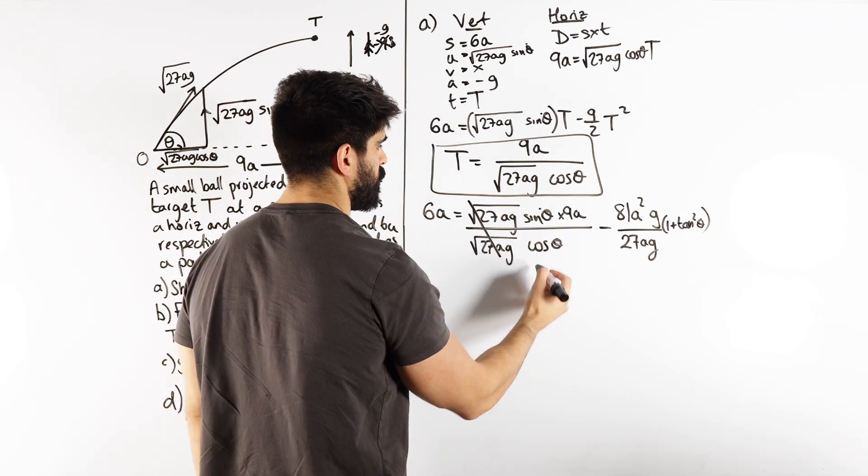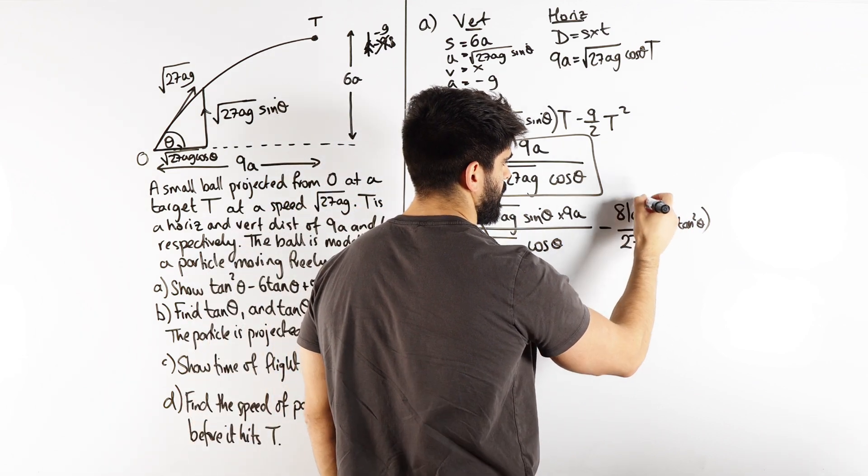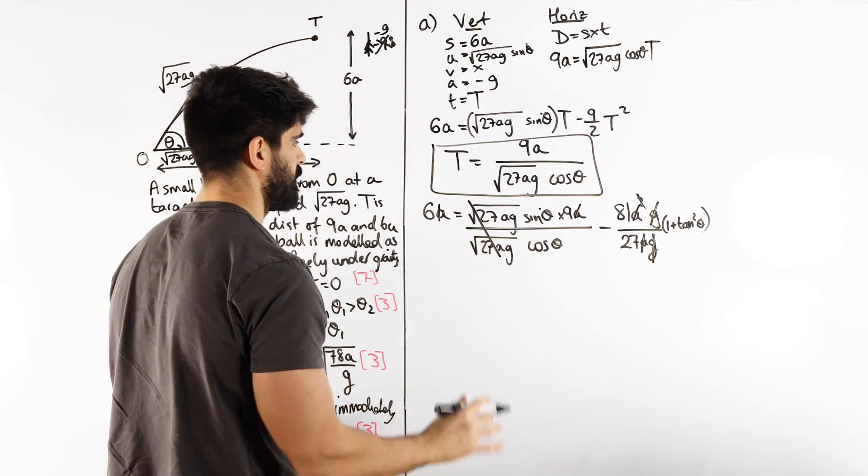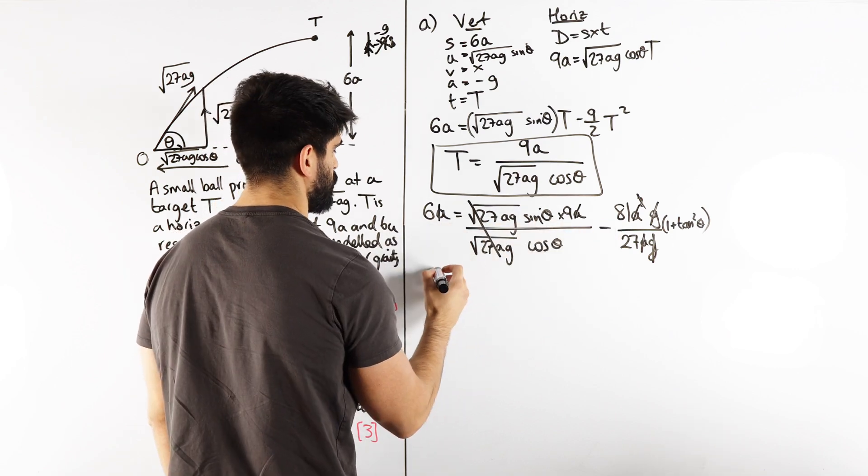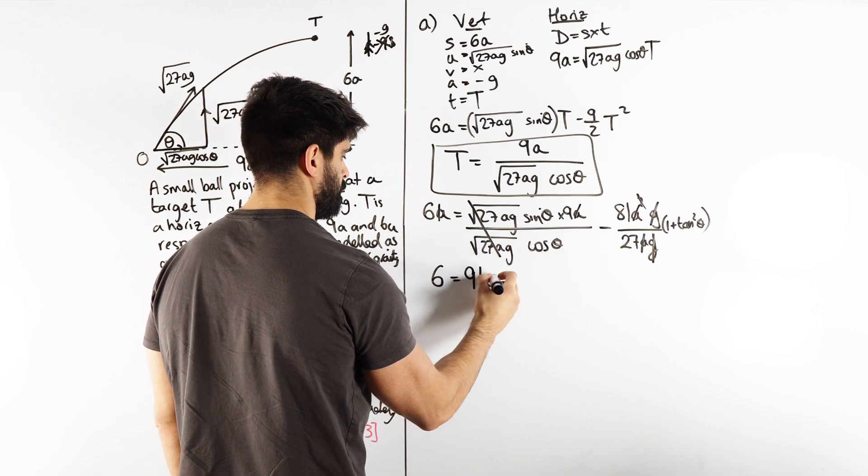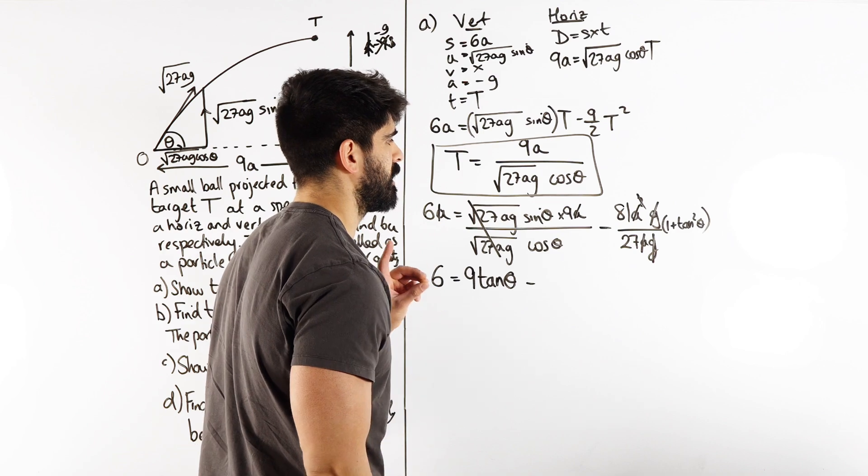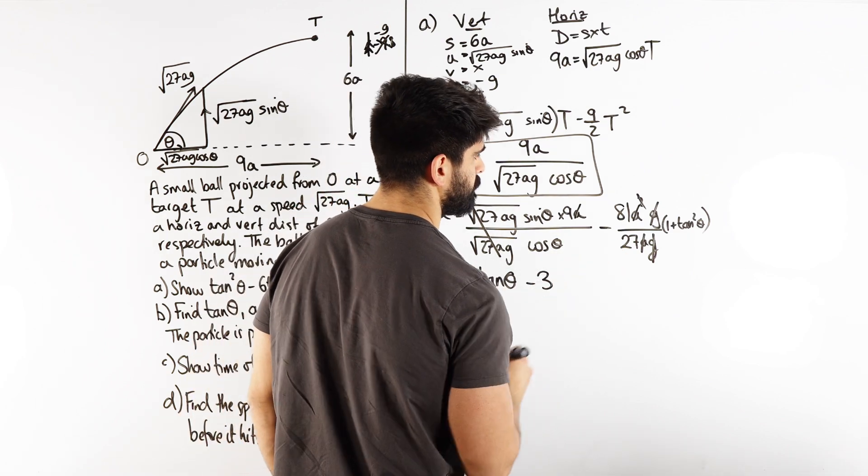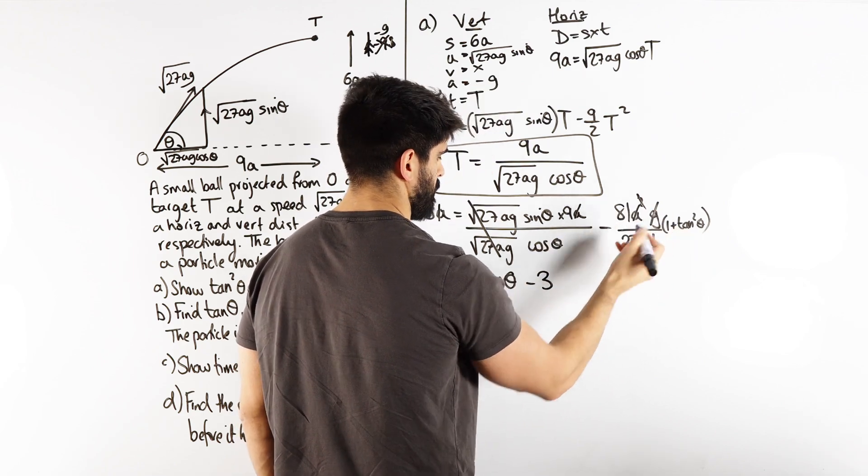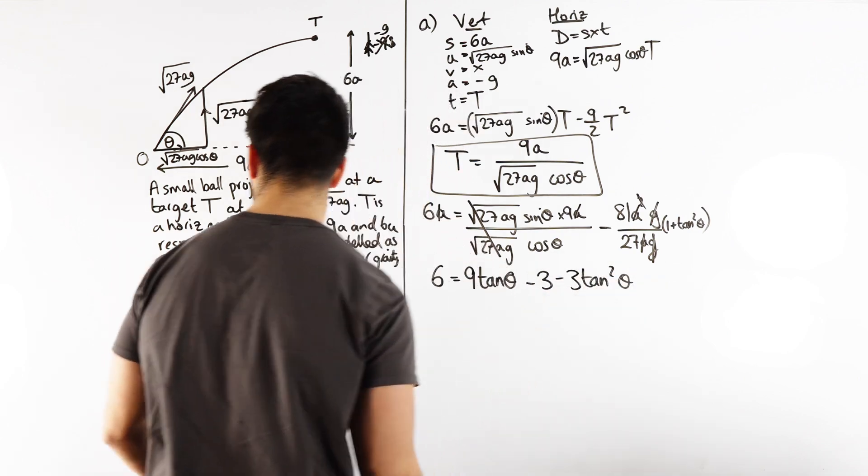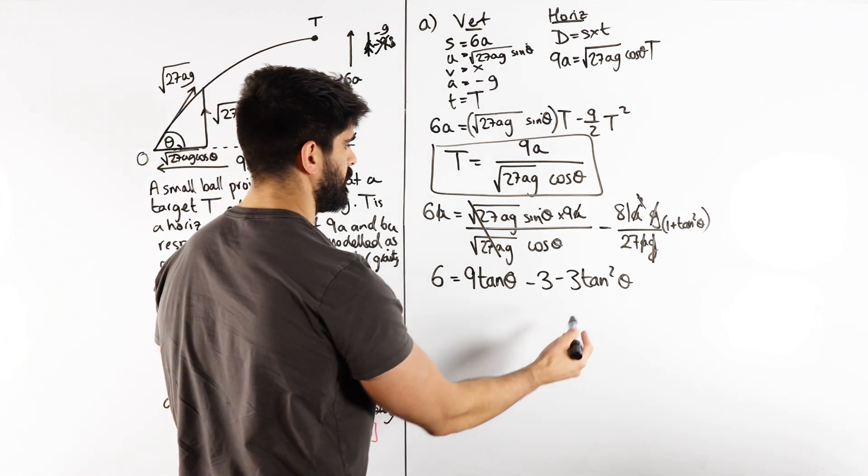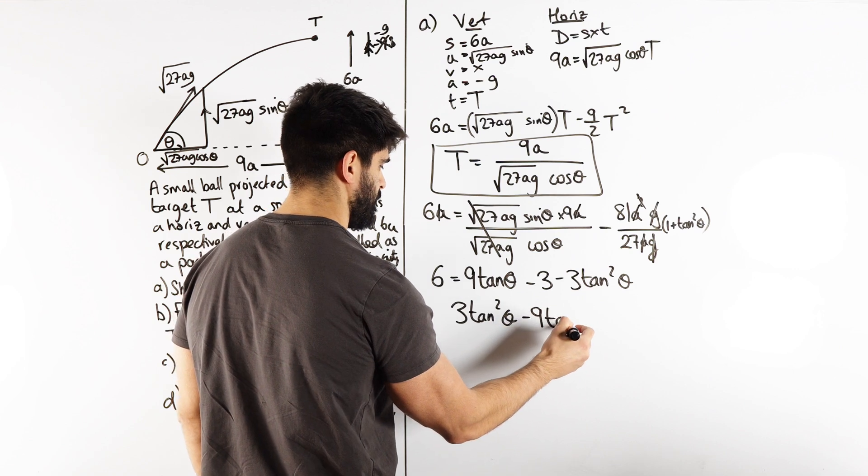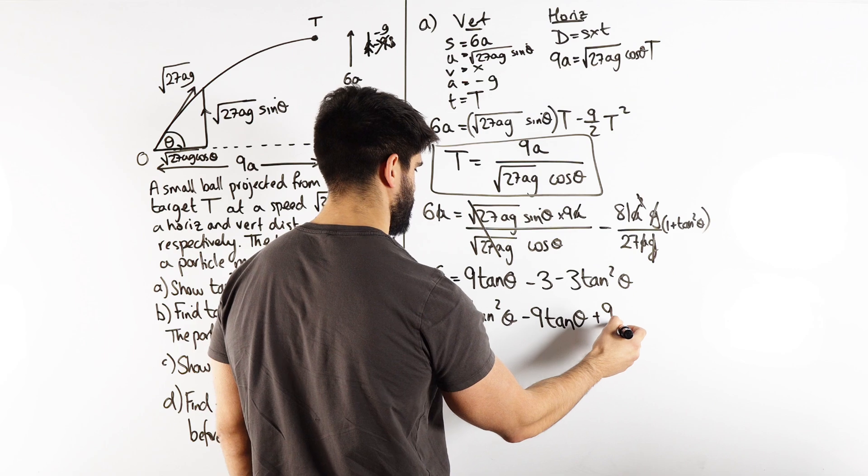Let's clean all of this up. The g's cancel, sine over cos is just tan. Cross out - these a's cancel. Without making it too messy, we have 6 = tan times 9 minus 81 over 27 which is 3 times (1 + tan²θ). Expanding out: minus 3 minus 3tan²θ. We're slowly getting towards this. Move this over so we get 3tan²θ, move that over minus 9tanθ plus 9 = 0.